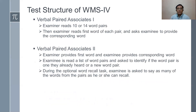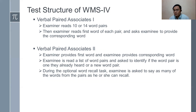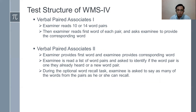Next, verbal paired associates: the examiner reads 10 or 14 word pairs, then reads the first word of each pair and asks the examinee to provide the corresponding word — for example, 'sun-moon,' then later the examiner says 'sun' and waits for the response 'moon.' In verbal paired associates 2, the examiner provides the first word and the examinee provides the corresponding word. The examiner reads a list of word pairs and asks the examinee to identify if the pair is one they already heard or a new word pair. During the optional word recall task, the examinee says as many words from the pairs as he or she can recall.